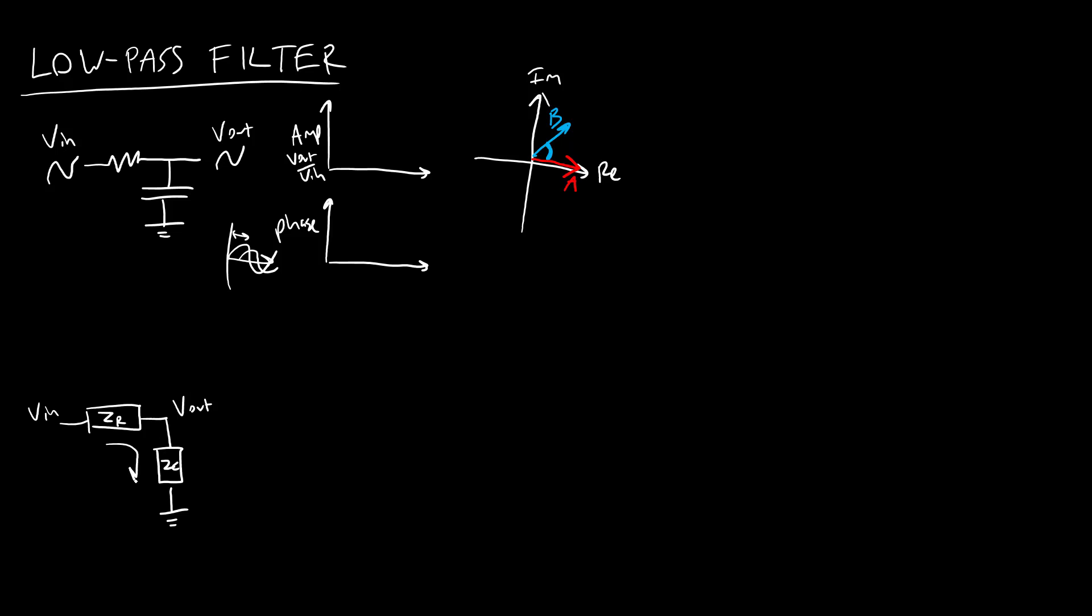We know that these impedances are in series. So the current through them must be the same. And remember that we know from previous videos, the impedance of a resistor is just R. The impedance of a capacitor is 1 over Cj omega. So remember we're using j to represent the square root of negative 1. Omega is the angular frequency there. So this is a complex number, which again ties back into the whole complex plane representation.